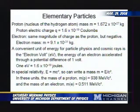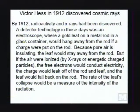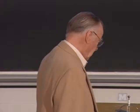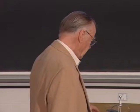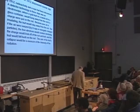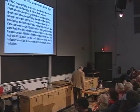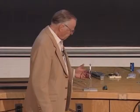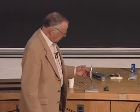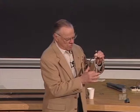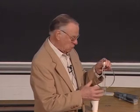Now a little history. In 1912, radioactivity and x-rays had been discovered. The detector technology of those days was an electroscope. Here is a little pivot rod, very nearly perfectly balanced, so it takes very little force to hold it out. If the rod and this piece have the same electric charge and are electrically connected at the pivot, the mutual charges repel and this thing will be pushed away. I'll use a little generator — and you can see it stands away.